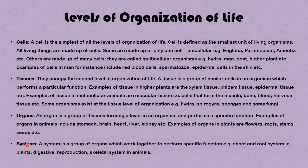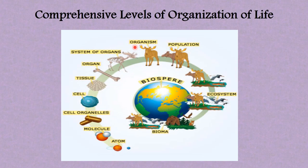The final level is systems. A system is a group of organs which work together to perform a specific function. Examples include the shoot and the root system in plants, and the digestive, reproductive, and skeletal systems in animals.